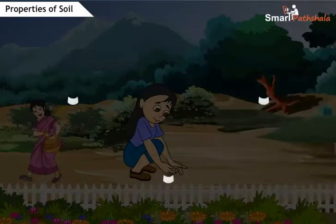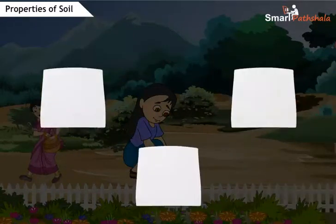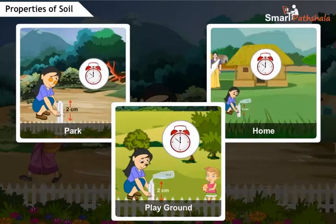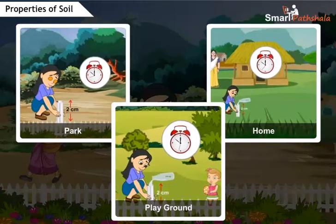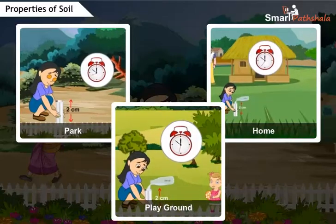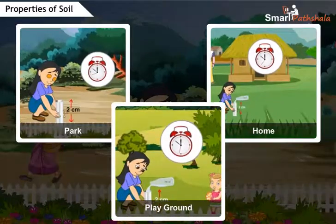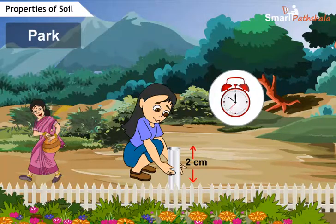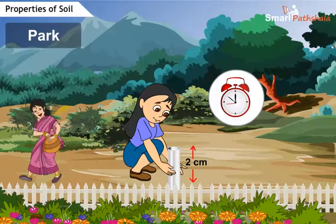Select three samples of soil: one at a park, one at your home, and another one at the playground. Take a PVC pipe with a diameter of 5 centimeters and cut a 20 centimeter long piece.